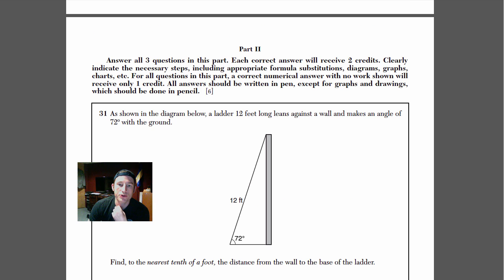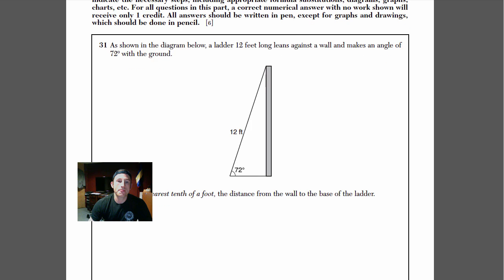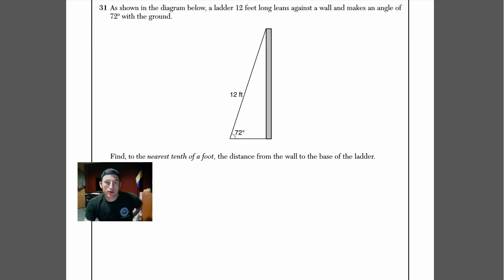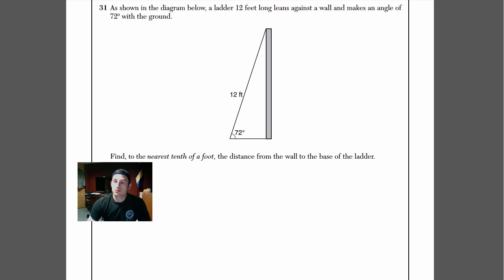Hey, this is Brian with Radical Prep. We're doing the January 2015 Integrated Algebra exam and we're at the Part 2 section, number 31. Number 31 says, as shown in the diagram below, a ladder 12 feet long leans against the wall and makes an angle of 72 degrees with the ground. Find to the nearest tenth of a foot the distance from the wall to the base of the ladder. The distance from the wall to the base of the ladder — we can call that x.